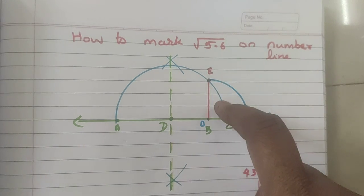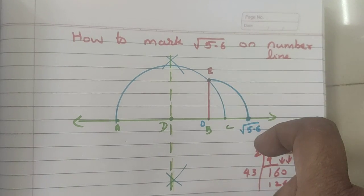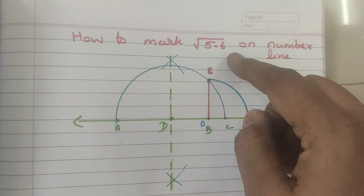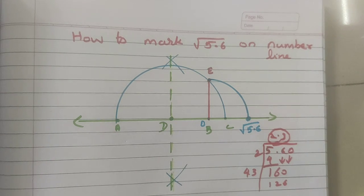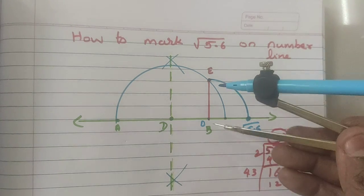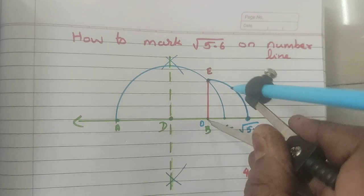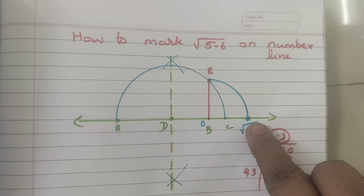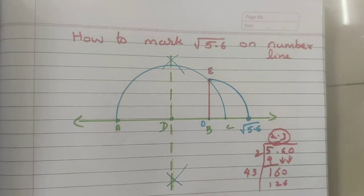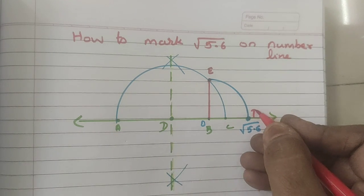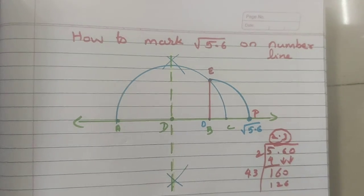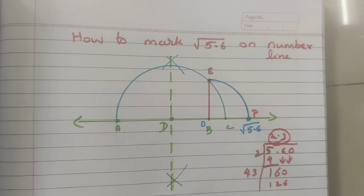BE is the perpendicular line. Now, this measurement is root 5.6. So, take your compass. Same measurement you should measure and draw the semicircle. So, this point will touch the number line at, let it be P. So, P is the point on the number line that measures root 5.6. I hope you have understood this. Thank you.